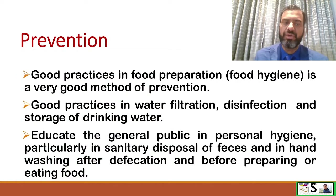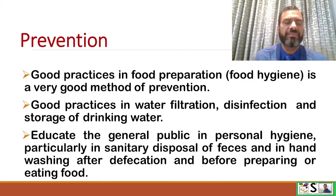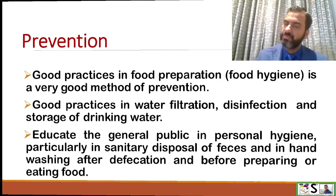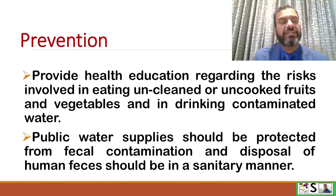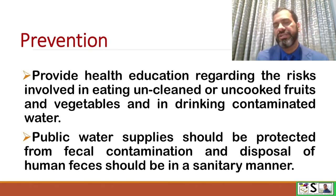How can we prevent amoebiasis? Good practices in food preparation — good food hygiene — is a very effective method for prevention. Good practice in water filtration, disinfection, and storage of drinking water is important. Health education for the general public regarding personal hygiene, particularly sanitary disposal of feces, hand washing after defecation, and before preparing food, is essential. People should also be educated about the risks of eating uncooked food, fruits, vegetables, and drinking contaminated water. Public water supply should be protected from fecal contamination and disposal of human feces should be carried out in a sanitary manner.